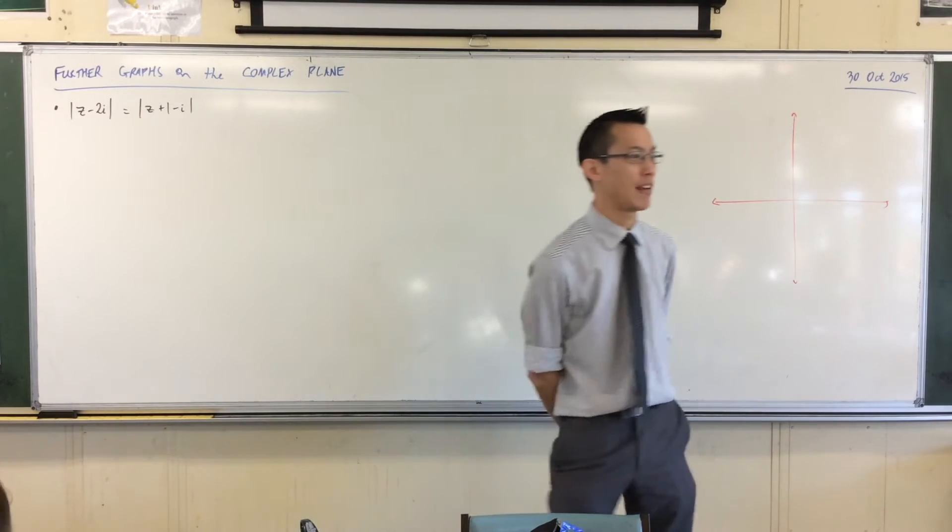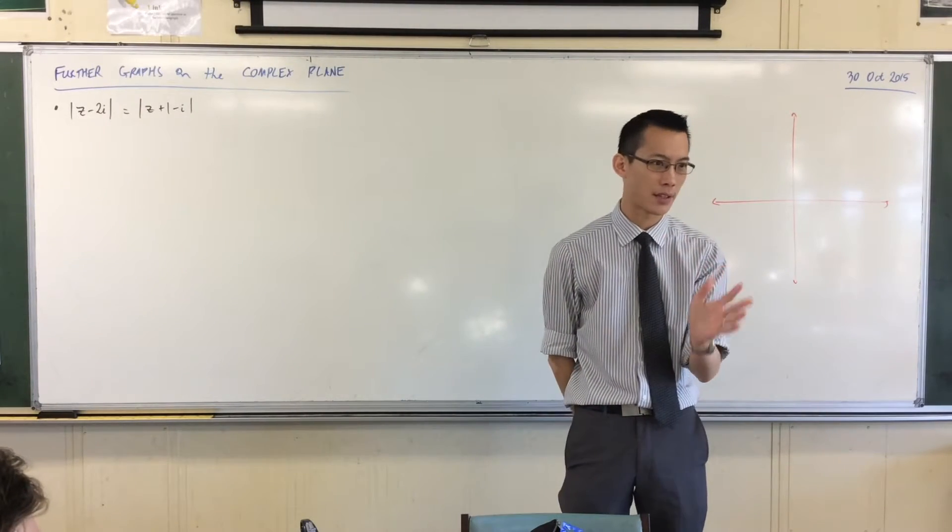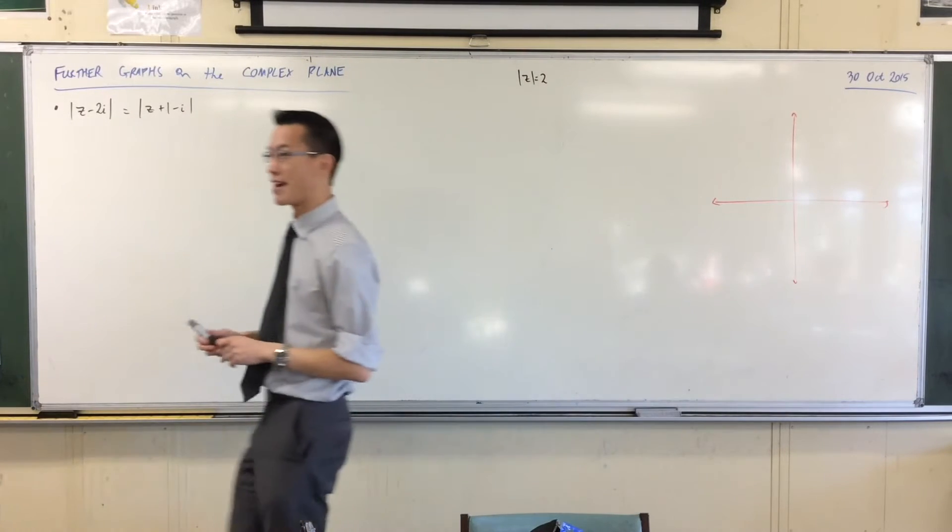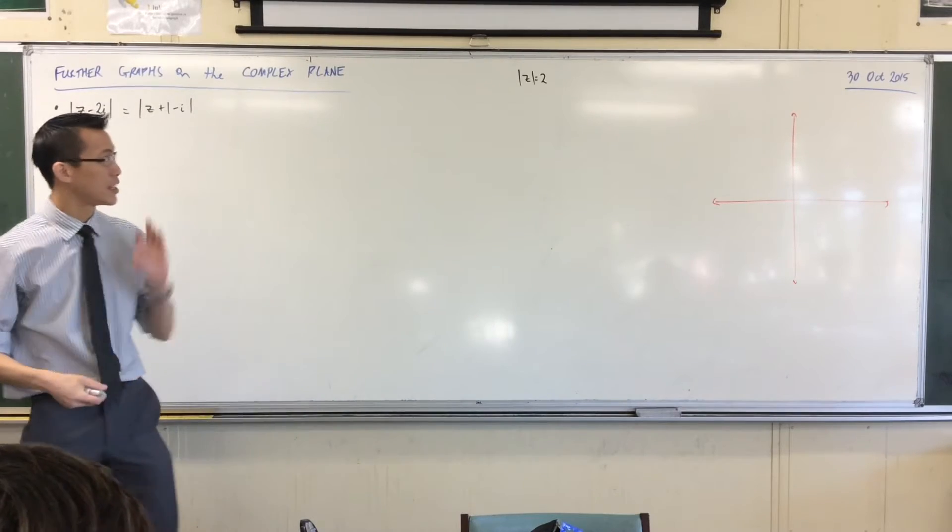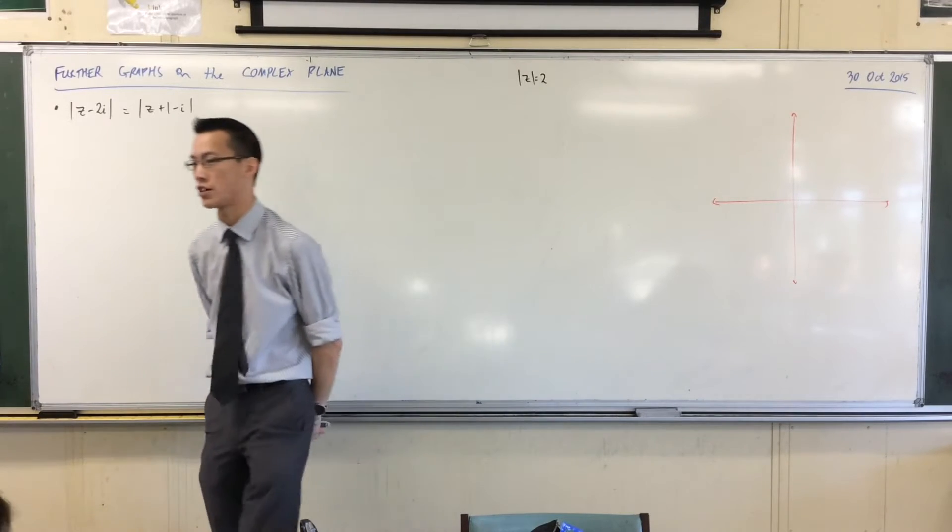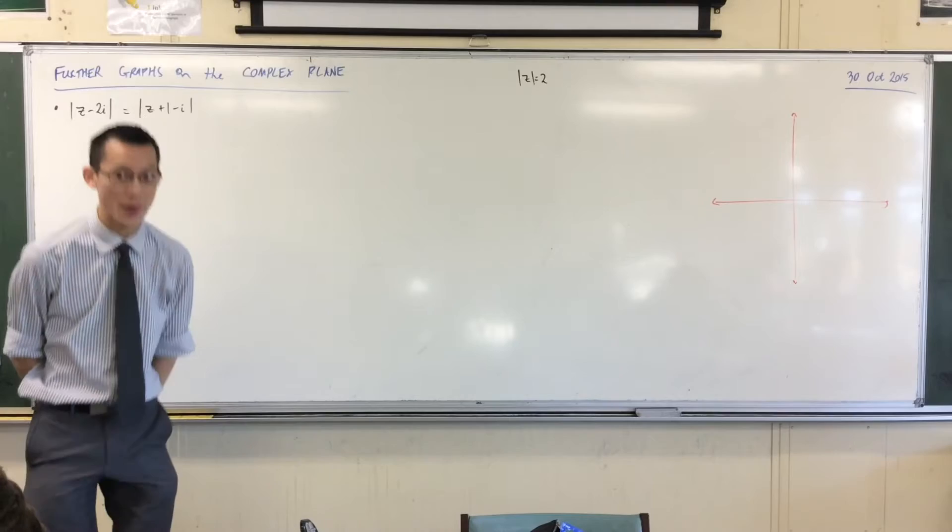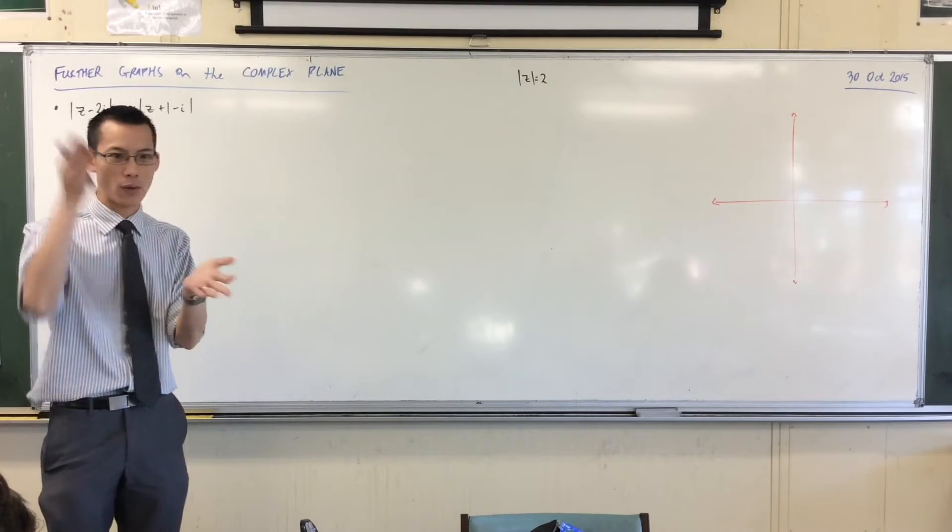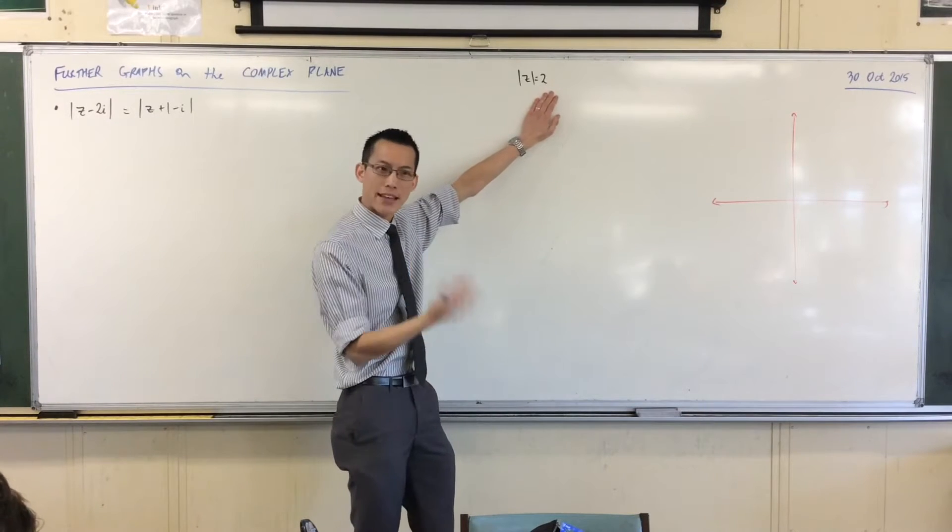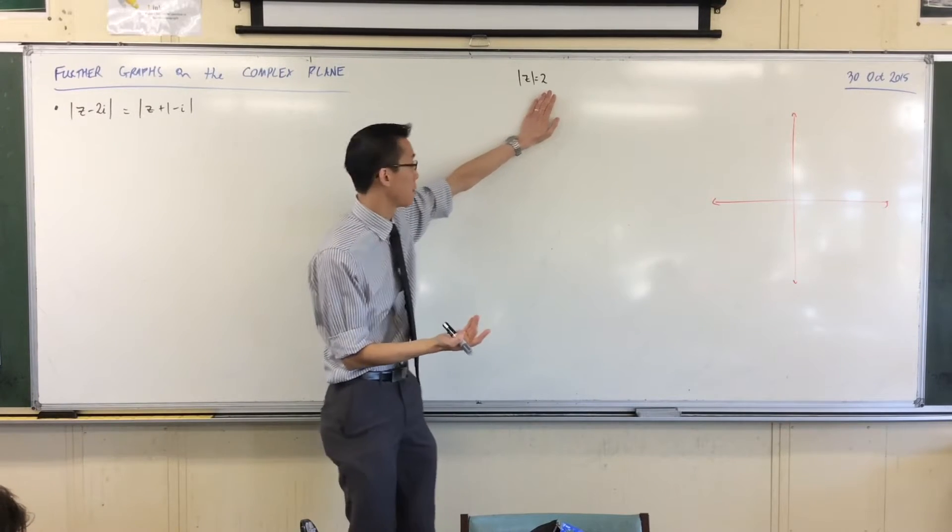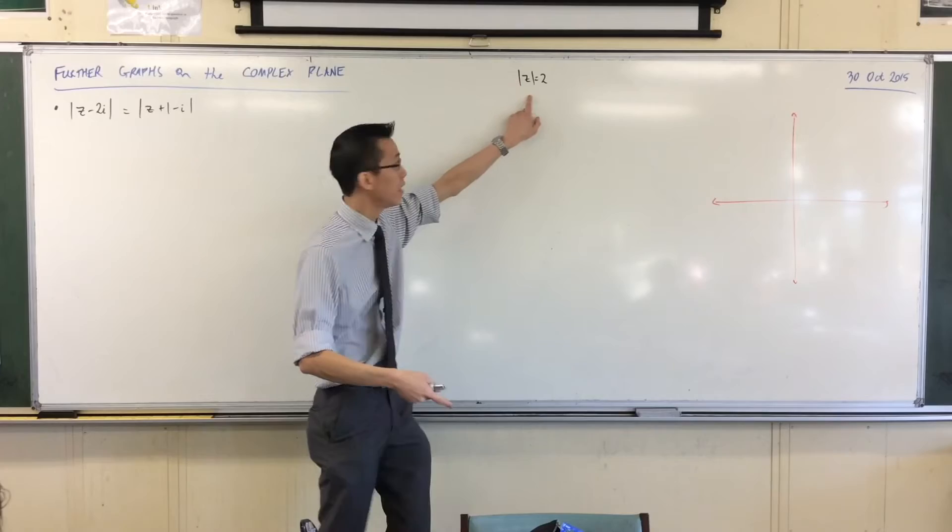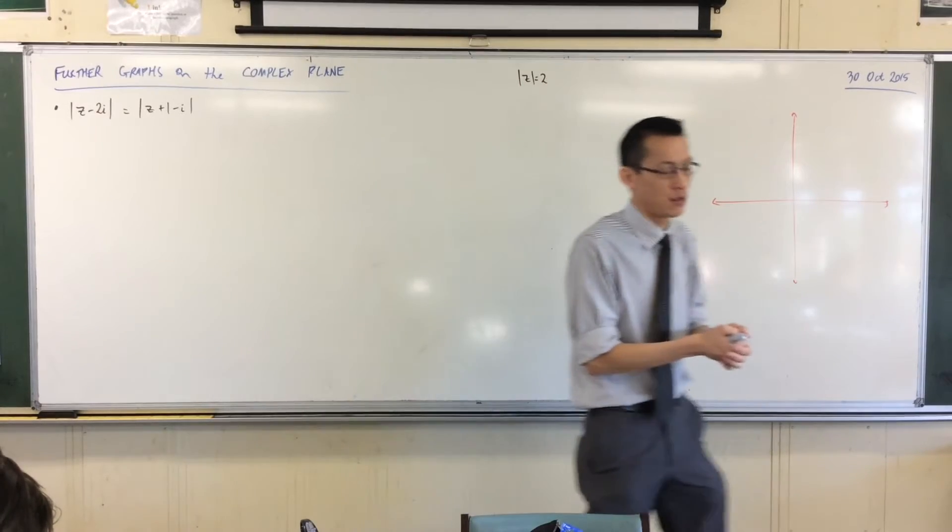Last time we were looking at graphs in the complex plane, and we looked at very simple graphs. Do you remember we looked at graphs like this? We approached it algebraically, we approached it geometrically, and we determined how would you describe the locus traced out by this equation? It's a circle. What else can you tell me about it? Where is it placed? It's at the center of the origin, and its radius is 2, right? Because in fact, by definition, that's what it means. The modulus is the distance from the origin, so the distance from the origin to z is 2, so therefore it has radius 2.